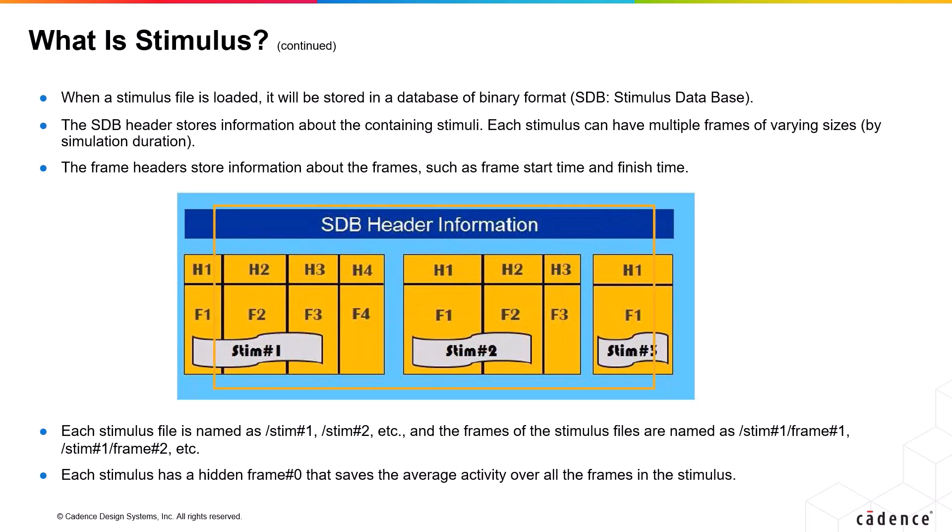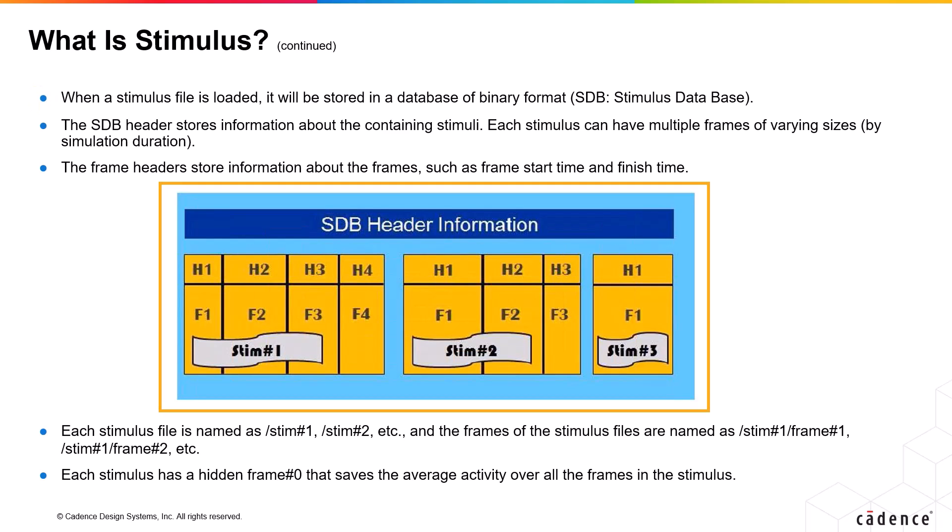This is what your SDB structure looks like. You have an SDB header that stores information about its stimuli. The stimulus is divided into different stim numbers: stim number 1, stim number 2, and stim number 3. Each stimulus can have multiple frames of different sizes per the simulation duration. For example, stim number 1 has 4 frames — F1, F2, F3, F4 — stim number 2 has 3, and stim number 3 has 1, and so forth.